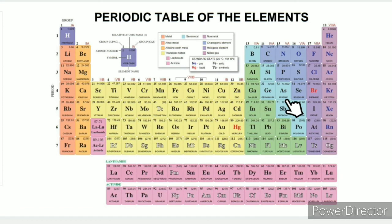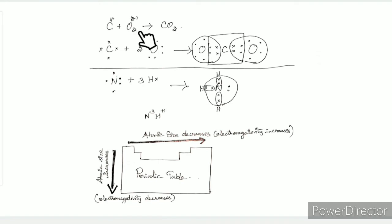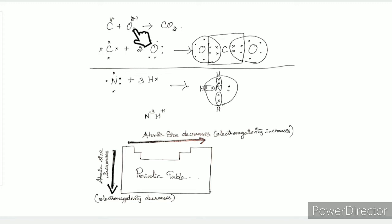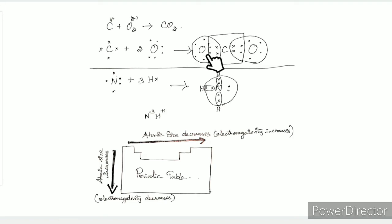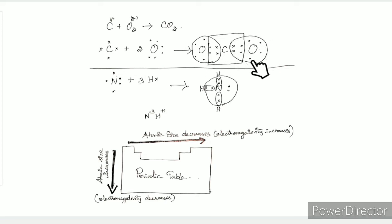In higher classes, we will go to higher secondary chemistry. For carbon dioxide: carbon has 6 electrons — first orbit has 2, second has 4, so valence electrons = 4. Oxygen has 8 electrons — first orbit has 2, second has 6, so valence electrons = 6. With 2 oxygens, oxygen contributes 2 × 6 = 12, and 8 electrons complete the octet.